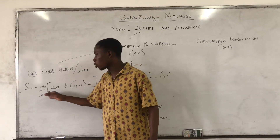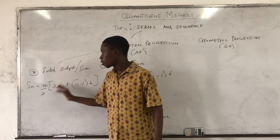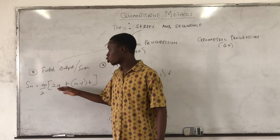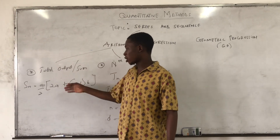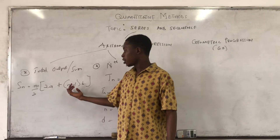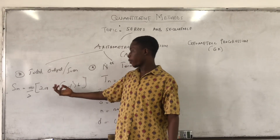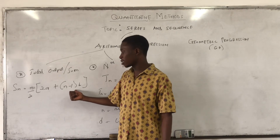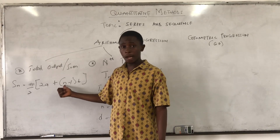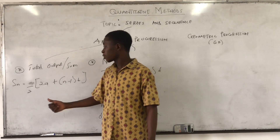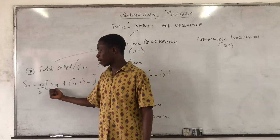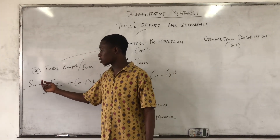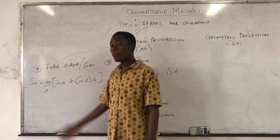For the total output or sum of an arithmetic progression, the formula is: SN = N/2 × [2A + (N - 1)D]. Where A is the first term, N is the number of terms, and D is the common difference. If the question asks you to calculate the total output or sum for arithmetic progression, use this formula.